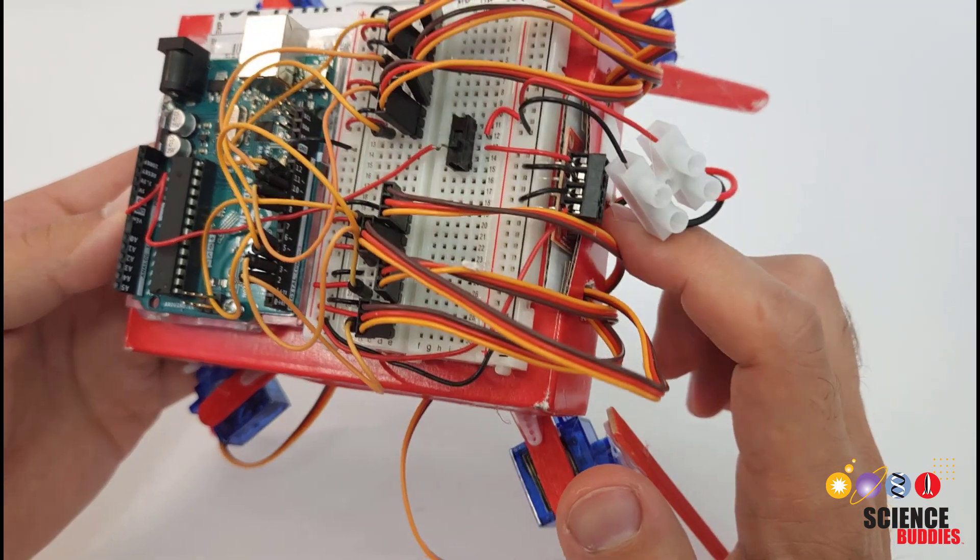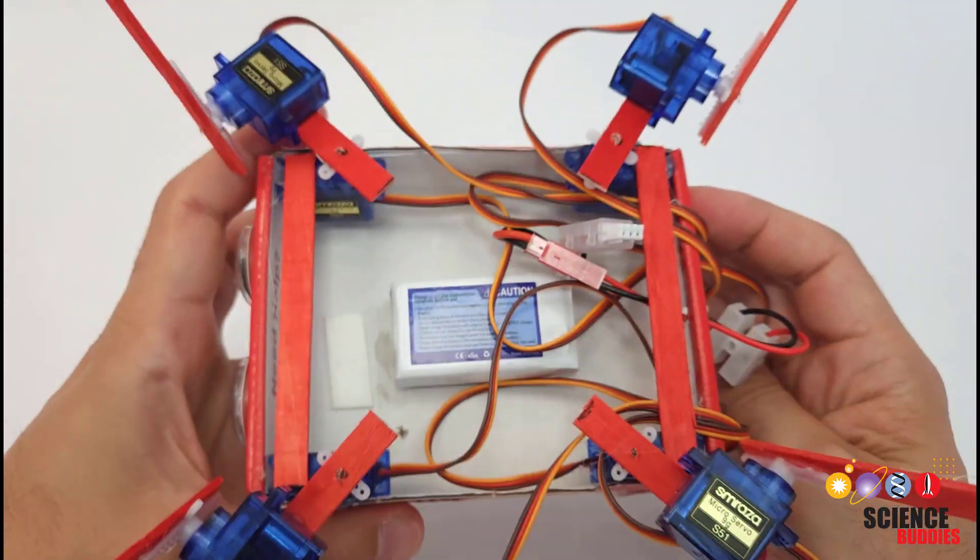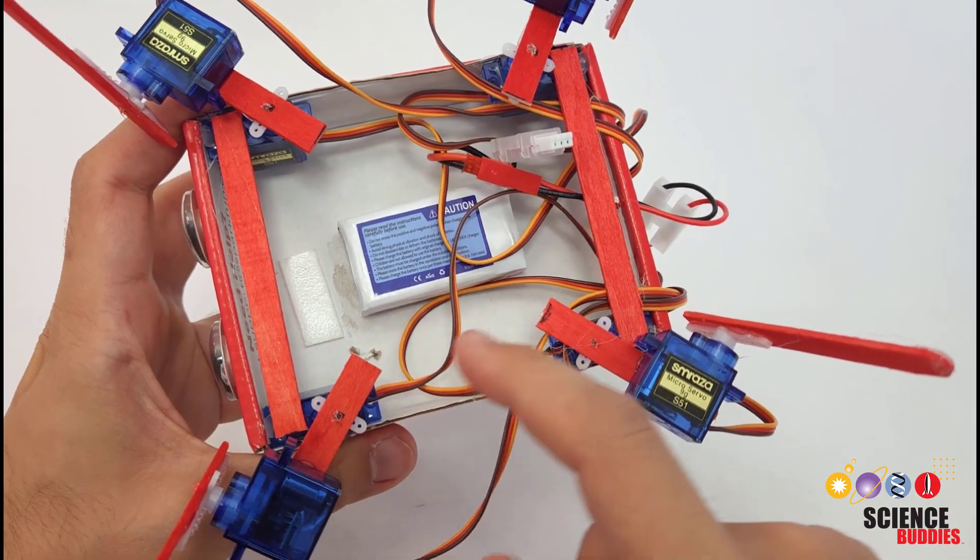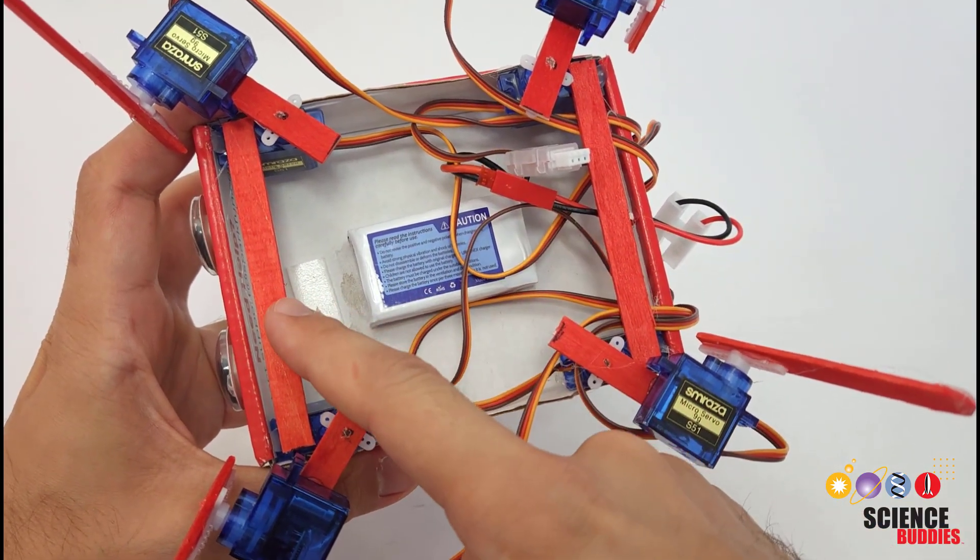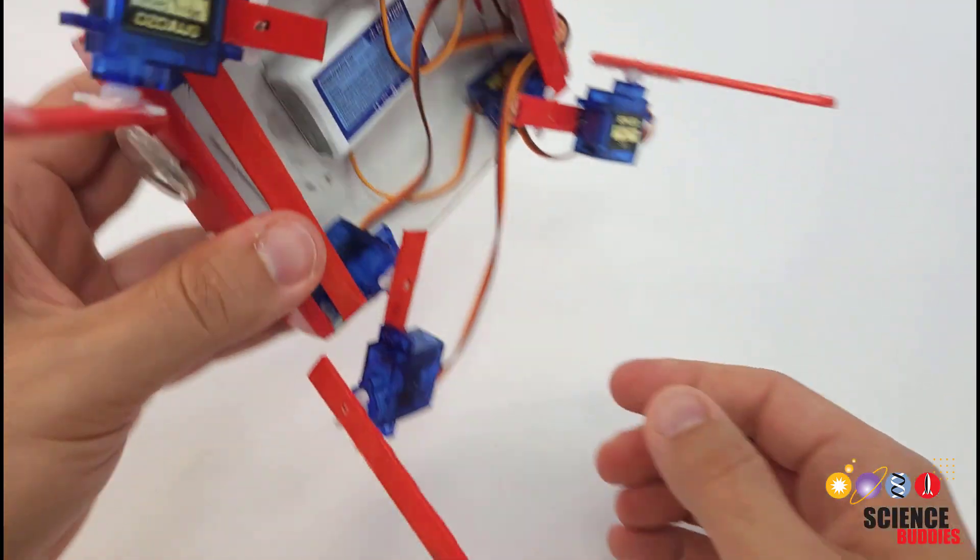We also have a separate voltage regulator board that we'll talk about more later. On the underside of the box we have the battery mounted and the motors for the four legs with some additional popsicle sticks for supports to help prevent the legs from wobbling too much.